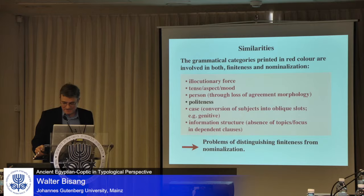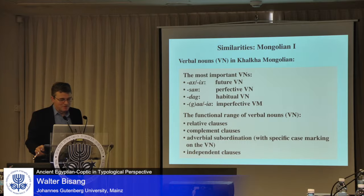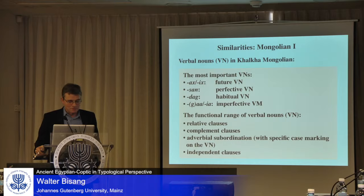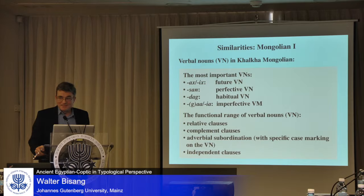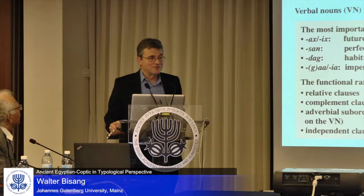That of course creates problems of distinguishing finiteness from nominalization at the very beginning. I will try to show this by an example from Chalkha Mongolian. Chalkha Mongolian has a number of what they call verbal nouns. For instance, -ach/-ich, which is called the future verbal noun; -san, the perfective verbal noun; -dag, the habitual verbal noun, and so on. These same markers are used in relative clauses, in complement clauses, in adverbial subordination — for people dealing with Coptic and Egyptian, that's nothing new — and they are also used in independent clauses.